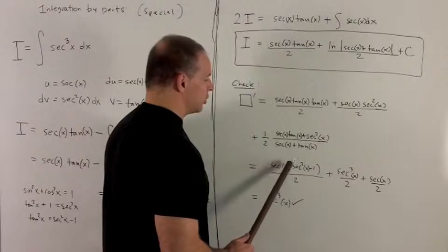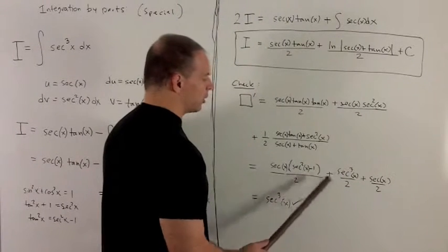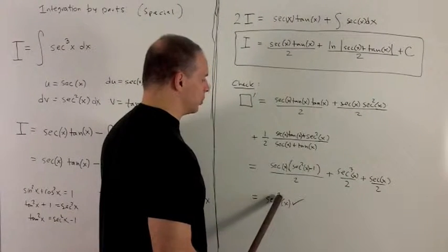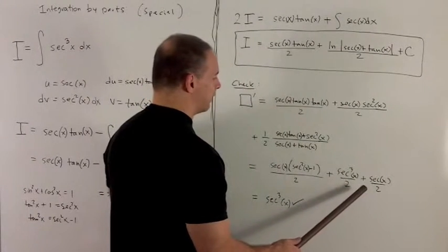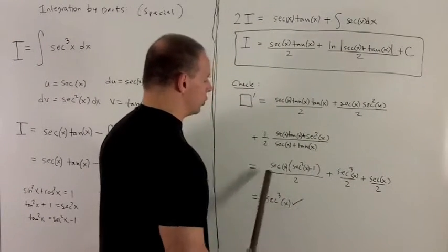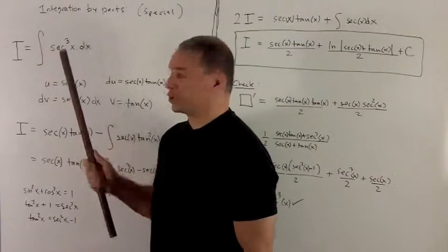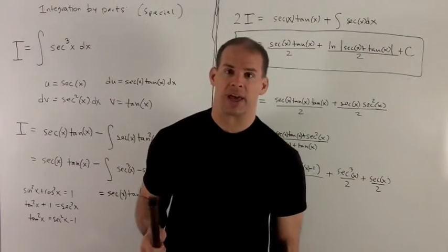Well, the secant cubes, they have twos underneath them. So when I put them together, I get a secant cubed. Then I have minus a secant a half plus a secant a half. So we're just left with a secant cubed. And note that that agrees with our original integrand. So the check works out.